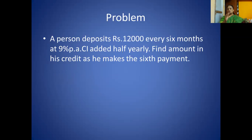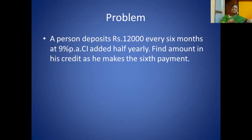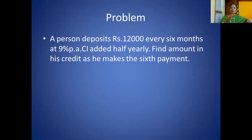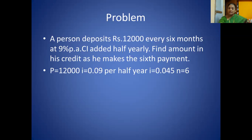Problem 2: A person deposits rupees 12,000 every 6 months at 9% per annum compound interest added half yearly. This 6-month period is very important. Find the amount in his credit as he makes the 6th payment. Since a specific payment number is asked, we go for the annuity immediate formula.